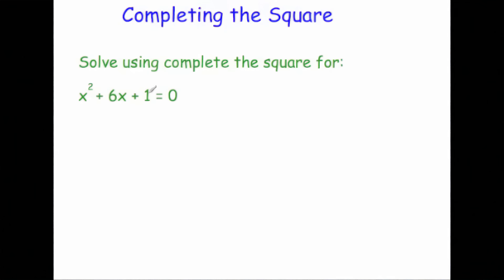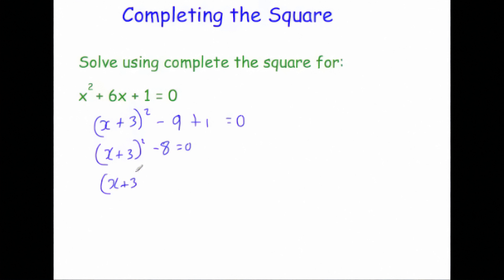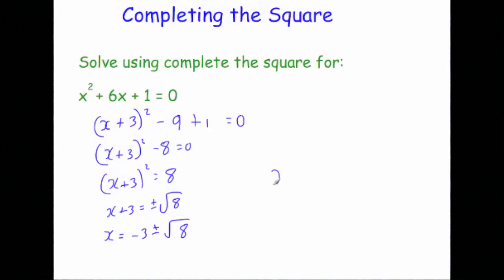This is especially useful when answers involve surds and you don't have a calculator. Take x squared plus 6x plus 1 equals 0. Completing the square: x plus 3 squared minus 9 plus 1 equals 0, so x plus 3 squared minus 8 equals 0, giving x plus 3 squared equals 8. Square rooting: x plus 3 equals plus or minus root 8. Taking away 3: x equals minus 3 plus or minus root 8. So the two answers are x equals minus 3 plus root 8, or x equals minus 3 minus root 8.